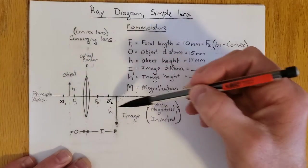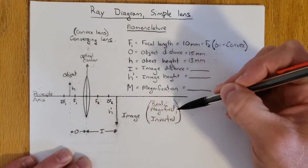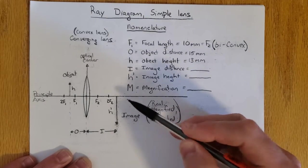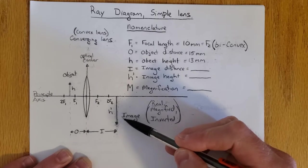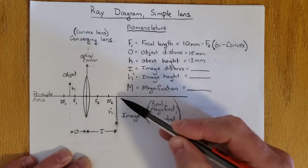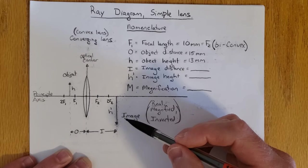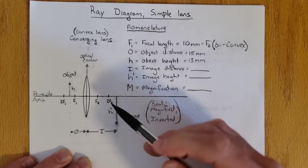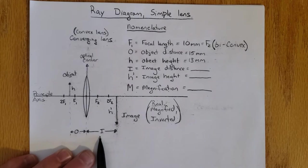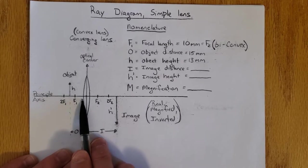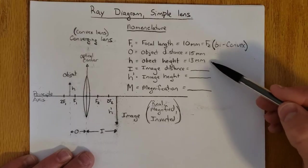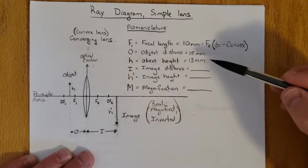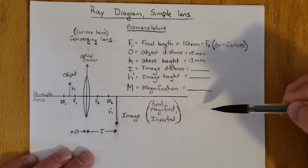We know that this is going to create a real magnified and inverted image somewhere over here on the back side. I don't actually know how big that image will be yet, but I've drawn it here to help you understand the nomenclature. The image is going to have some height h prime and it's going to be some distance i from the optical center. I have to either calculate those from what I know or draw the ray diagram. Both should give us more or less the same answers.